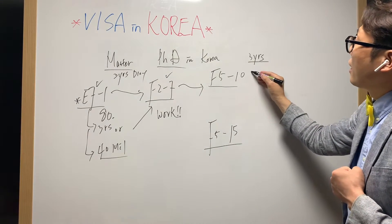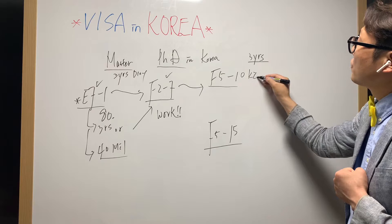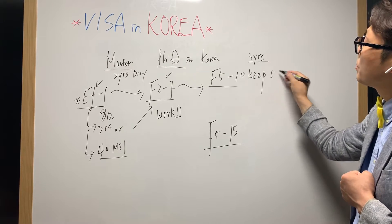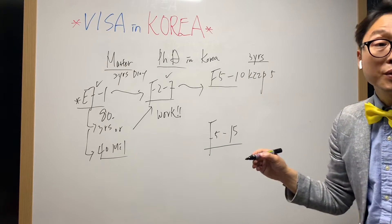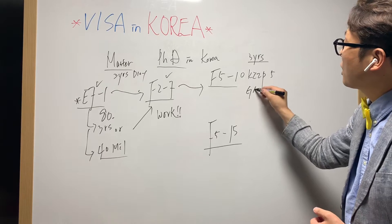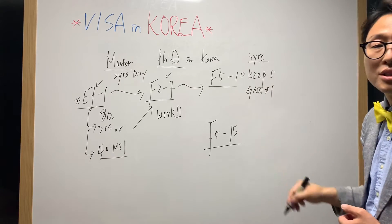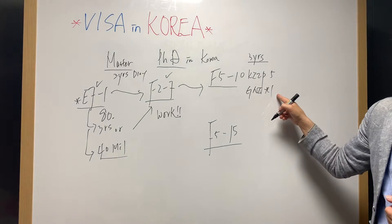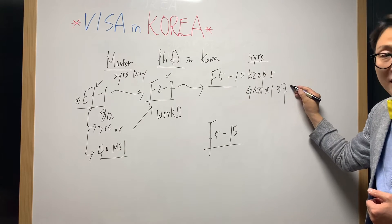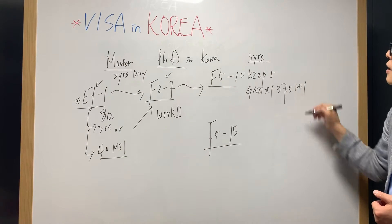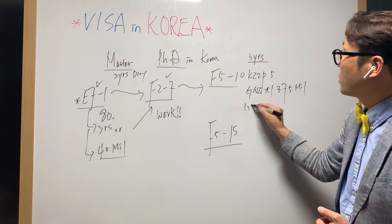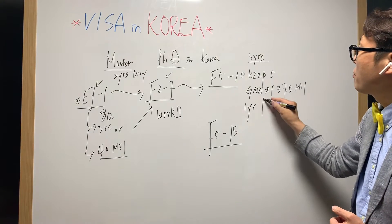You also have to study Korean KIIP stage 5 completion, and the previous year's income shall be over GNI one-time income, which is 37.5 million won, and also one year working as a permanent employment.